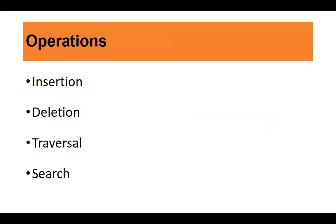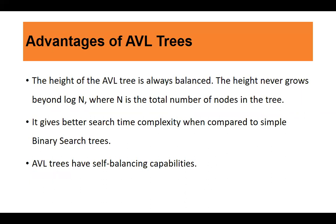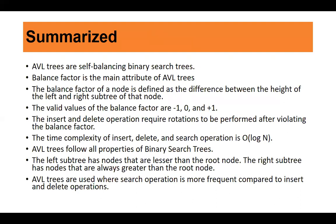The operations carried out on an AVL tree are insertion, deletion, and traversal. Insertion and deletion will be covered in the next lecture, where we will create an AVL tree from scratch by inserting nodes one by one. Deletion is similar to binary search tree deletion. The advantages of AVL trees: the height is always balanced and never grows beyond O(log n), giving very good time complexity. It gives better search time complexity compared to simple binary search trees, and AVL trees have self-balancing capabilities.